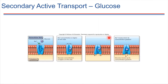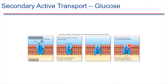Now let's look at secondary active transport, using glucose as the example. There's a carrier protein and a sodium ion gradient already established — a lot of sodium on the outside of the cell membrane, not so much on the inside. The sodium gradient is used to power the transport of glucose. Sodium moves down its concentration gradient, and that powers the pump to bring glucose inside the cell — moving glucose up its concentration gradient while sodium moves down its. It's a pretty interesting transport mechanism.